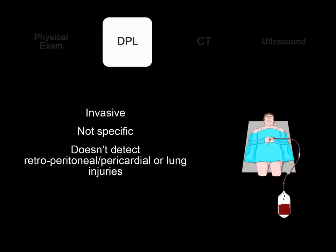Diagnostic peritoneal lavage: although DPL is still an option for many institutions, it has many disadvantages. It is an invasive tool. DPL is not specific — it tells you there is an injury, but it does not tell you which organ has been injured. It does not detect retroperitoneal injuries, and it doesn't detect pericardial or lung injuries.